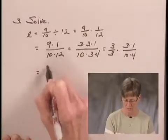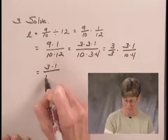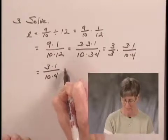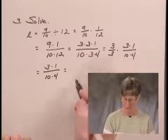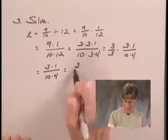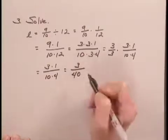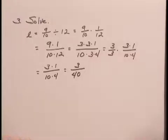And multiplying in the numerator, I get 3. In the denominator, I get 40. So the solution is 3 over 40.